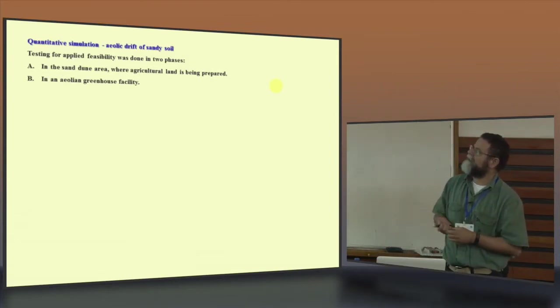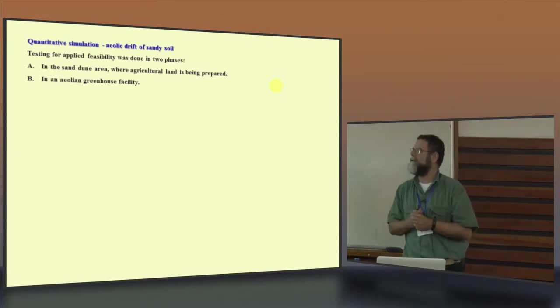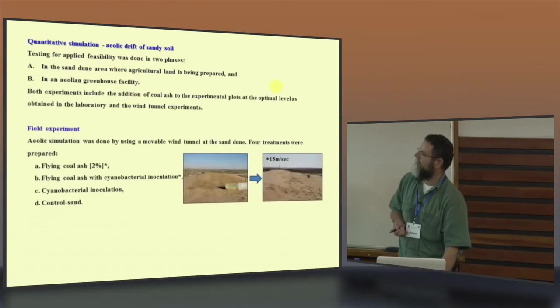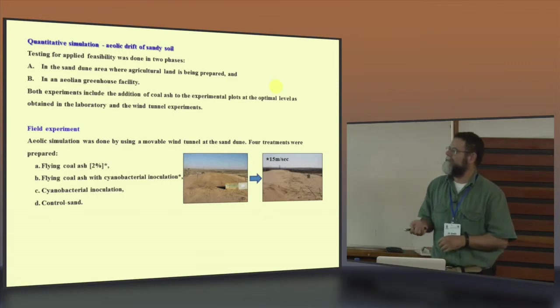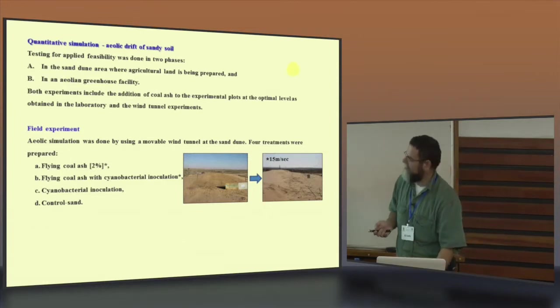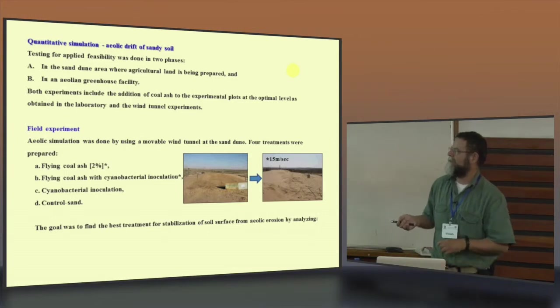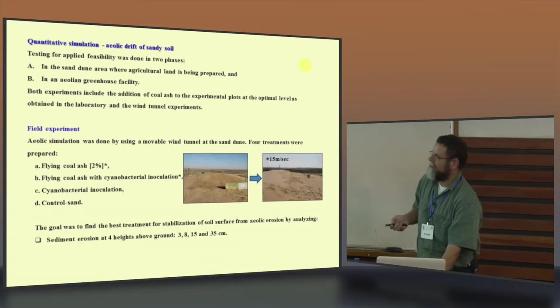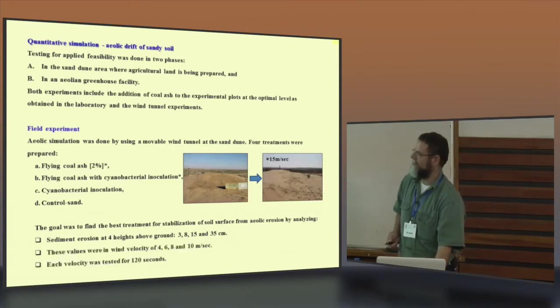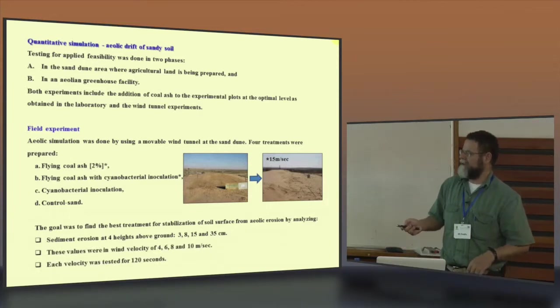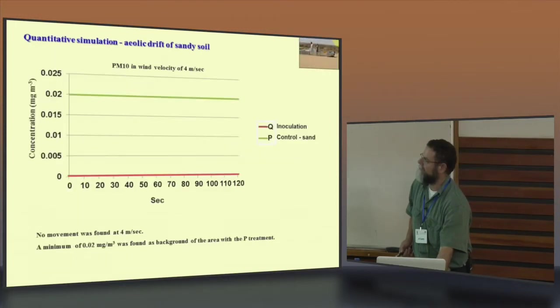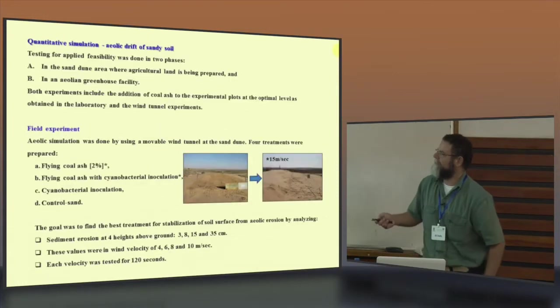Quantitative simulation, aeolic drift of sandy soil. Here we use the two of them, one in the agricultural land that is being prepared in the area, and in the aeolian greenhouse facility. We use four different treatments: fly ash, cyanobacteria inoculant, and control sand. The goal was to find the best treatment for stabilizing the soil surface from eolic erosion by analyzing the sediment erosion at four different heights. But here, I will summarize all of them together because no time to present all of them. And the value in the wind velocity of four, six, eight, and 10 meters per second. Each velocity was tested for about 120 seconds.